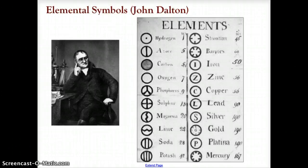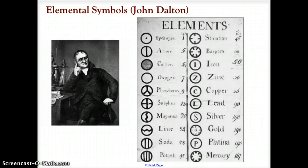It wasn't until John Dalton came along that we actually started to formalize the symbols. All of his symbols dealt with circles, carrying that same idea of balance from Aristotle. He was also the first to begin using letters that correspond to the name of the element — for example, Z for zinc, S for silver, and P for platina, which was platinum. The idea of symbols has been around for thousands of years.